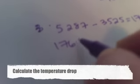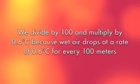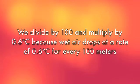Take that difference and divide by 100 again but this time you're going to multiply by 0.6 degrees Celsius. We divide by 100 and multiply by 0.6 because wet air drops at a rate of 0.6 degrees Celsius for every 100 meters.